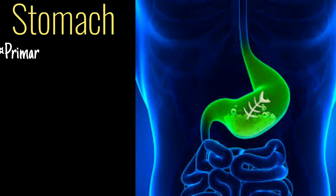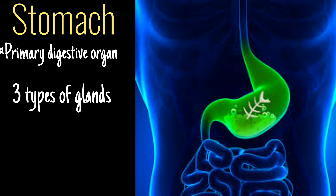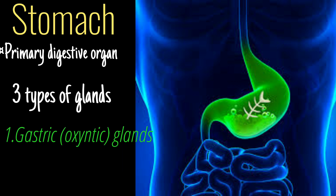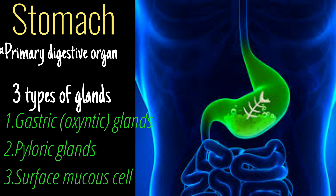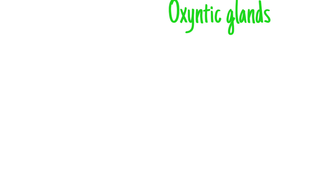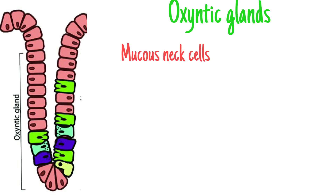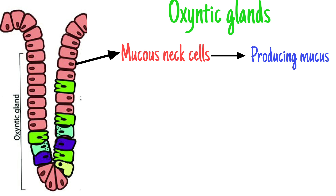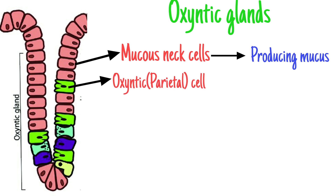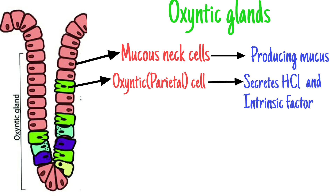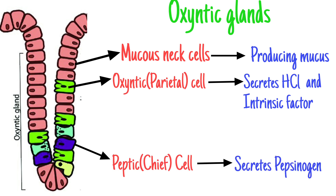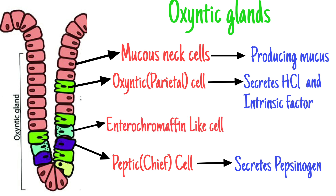The stomach is a primary digestive organ consisting of three types of glands: gastric or oxyntic glands, pyloric glands, and surface mucus cells. Oxyntic glands have different types of cells: mucus neck cells producing mucus, oxyntic or parietal cells secreting hydrochloric acid and intrinsic factor, peptic or chief cells secreting large quantities of pepsinogen, and finally the enterochromaffin-like cells or ECL cells that produce histamine.